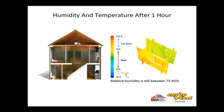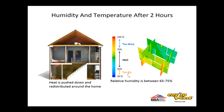Looking at the scale, the CFD model shows that after only one hour, the humidity within the dwelling is showing yellow, which means the humidity has fallen to around 80%. After two hours, the air has already fallen below 70% and the heat at high level has been totally redistributed around the property, saving energy.